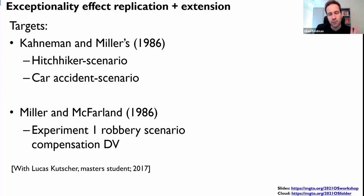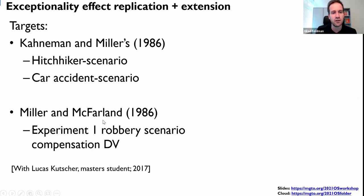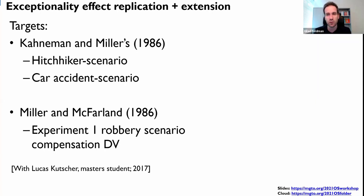So what does that look like? I feel like it's time for us to see an example. I'm going to talk about my first ever pre-registered replication and extension. This was done with a master's student in 2017 — his name was Lucas — and he decided to visit something called the exceptionality effect. It's from a very famous study, actually a review paper by Kahneman and Miller called 'Norm Theory,' which has at least 3,000 citations. I'm going to run these experiments together with you.